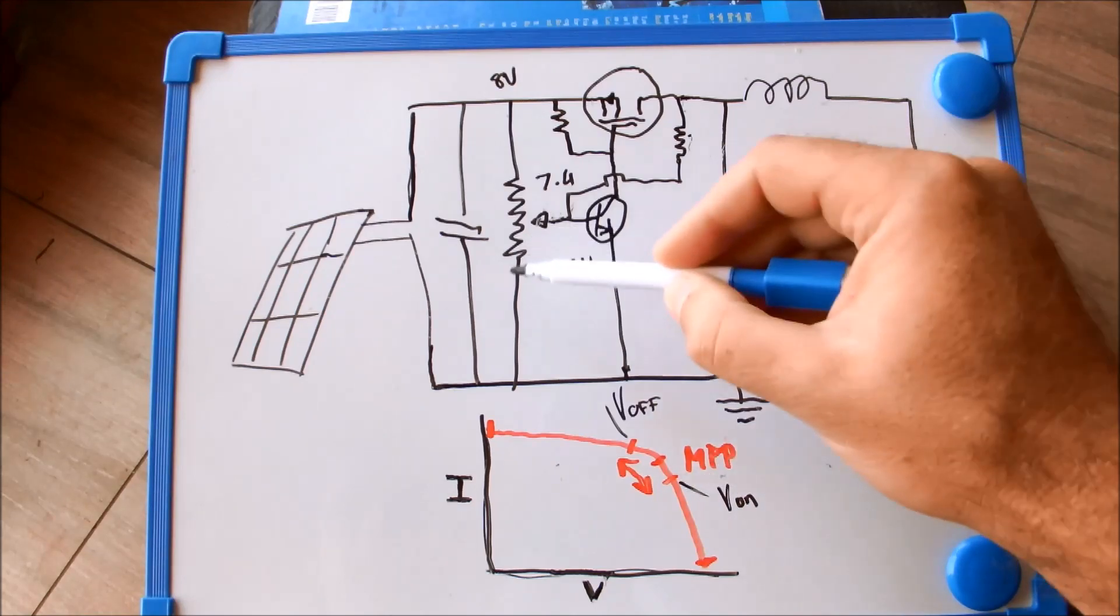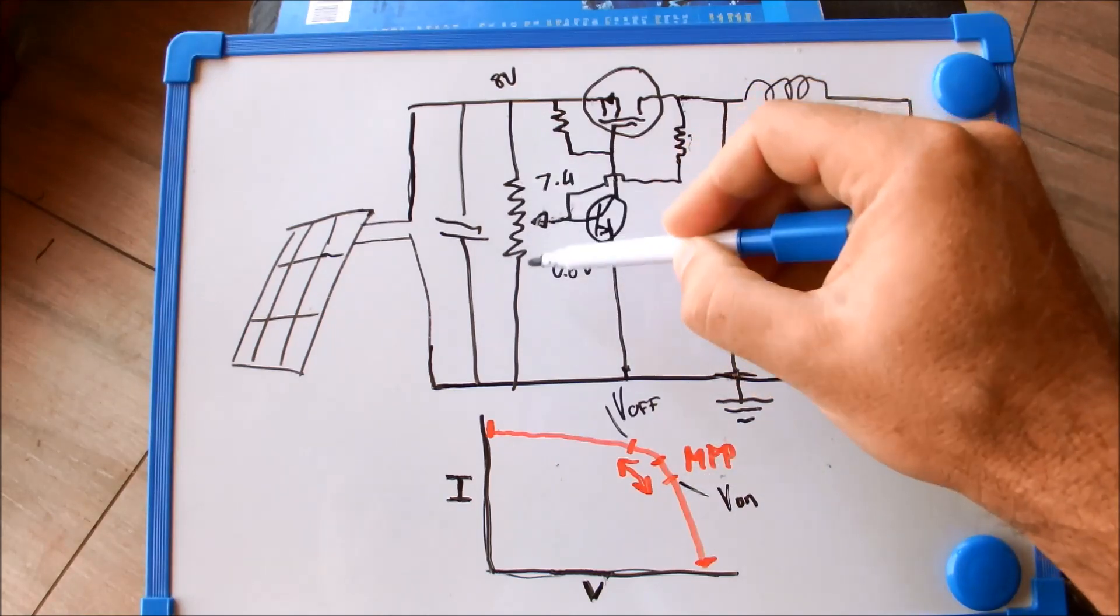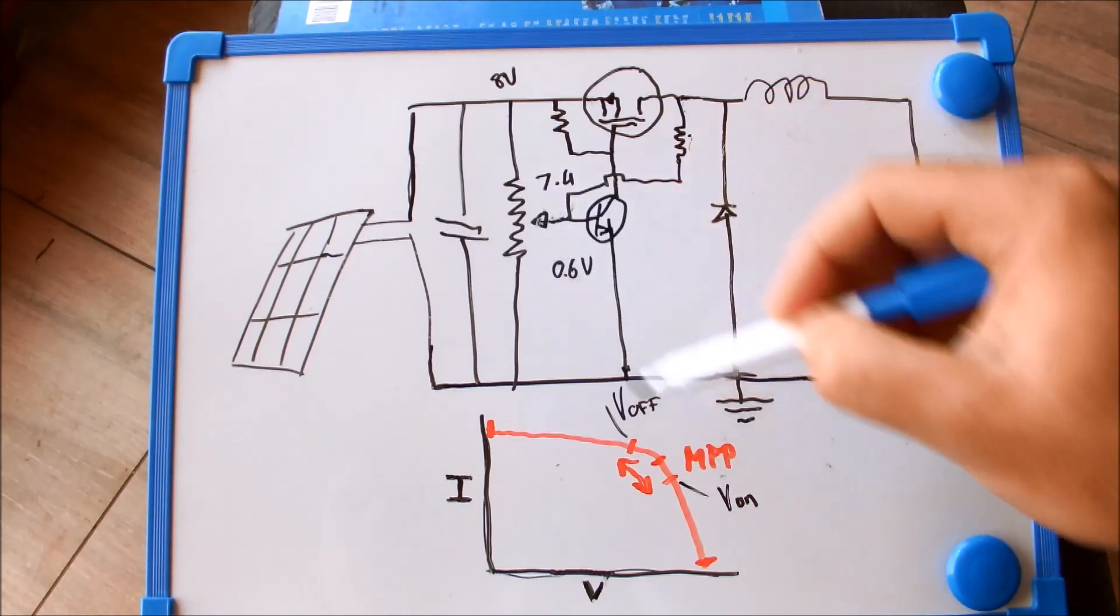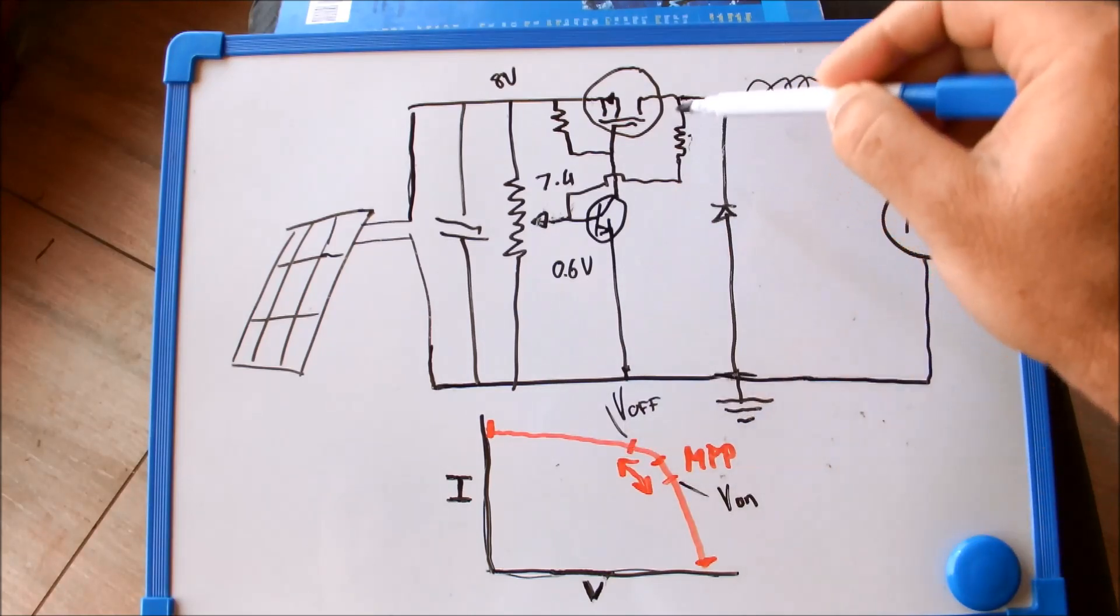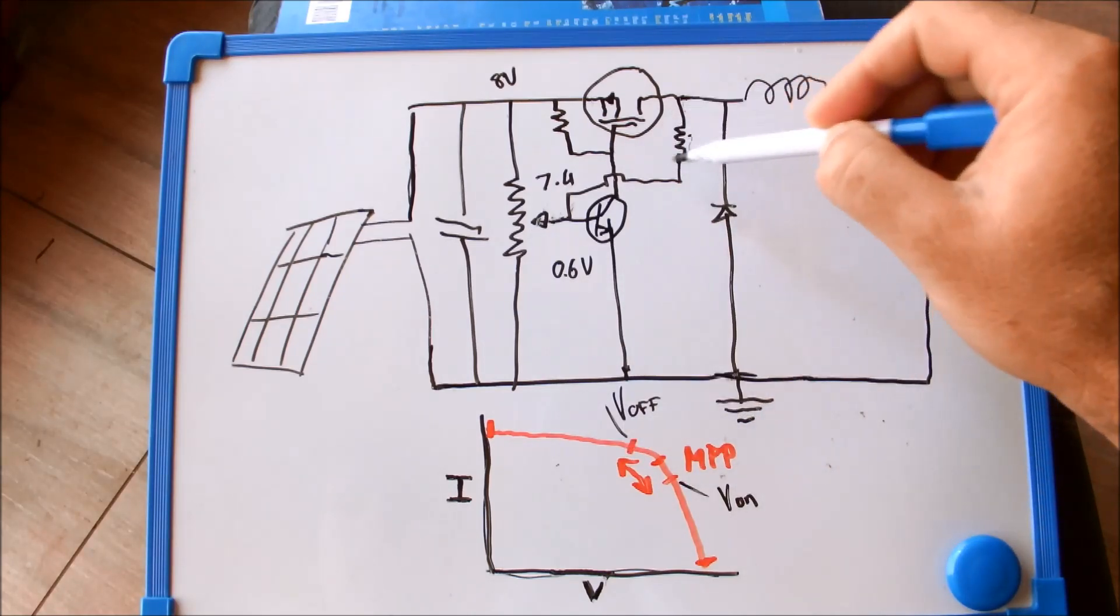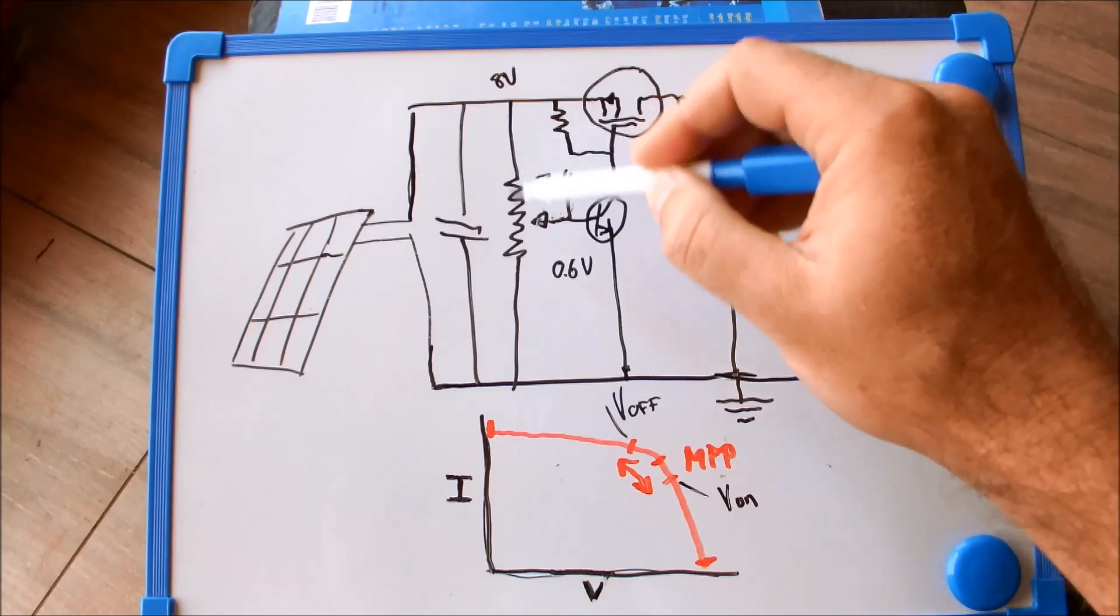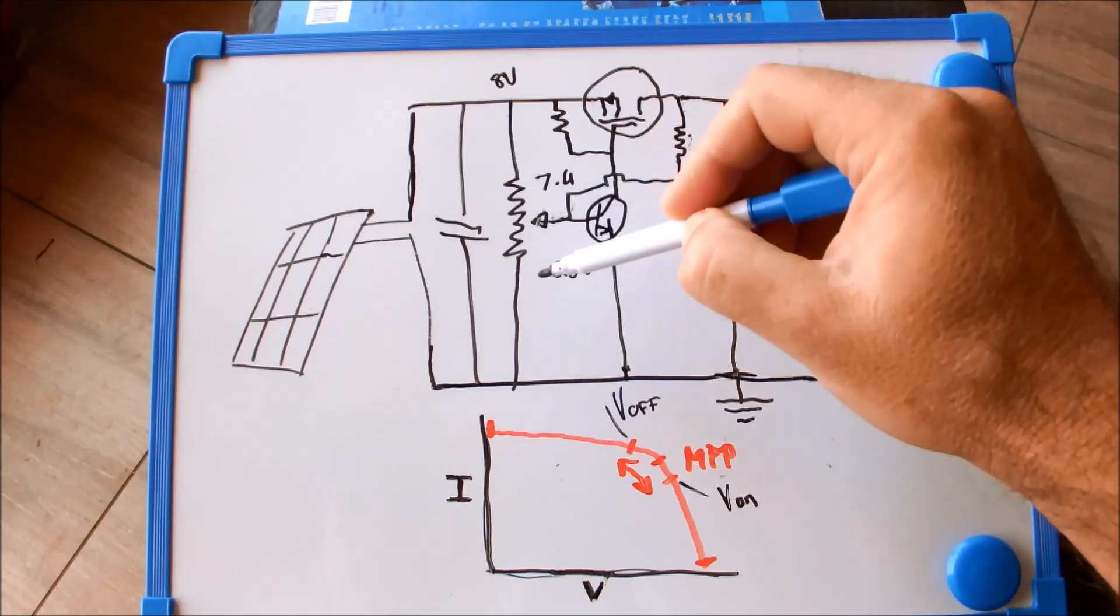The on voltage is adjusted by adjusting the ratio on this trim pot and the off value then depends on this feedback resistor and how it ties in with the voltage divider.